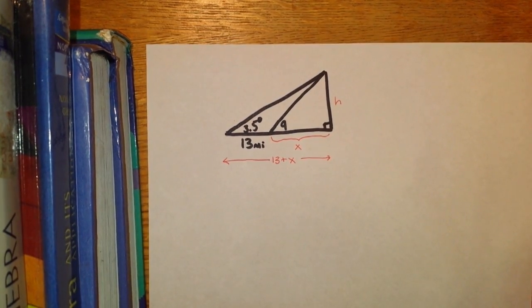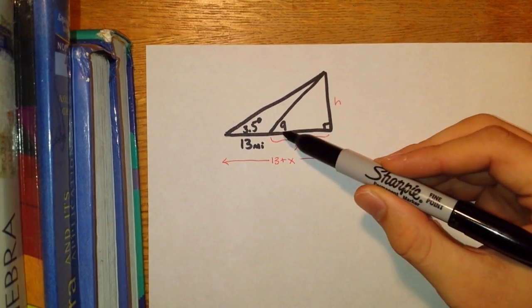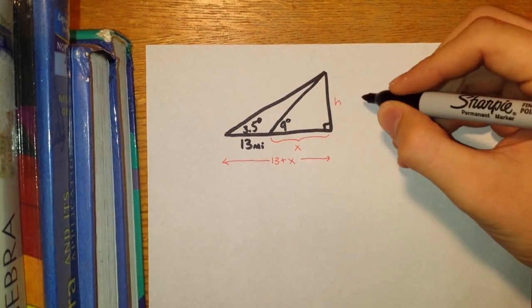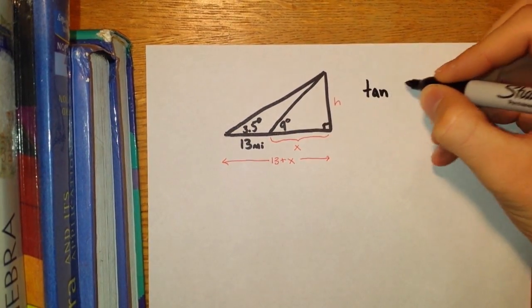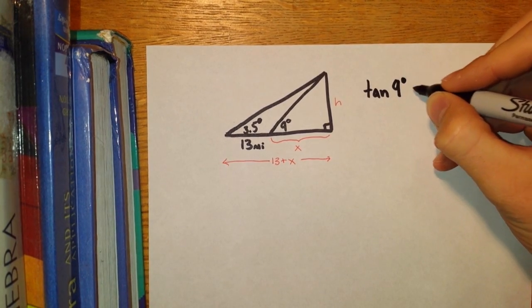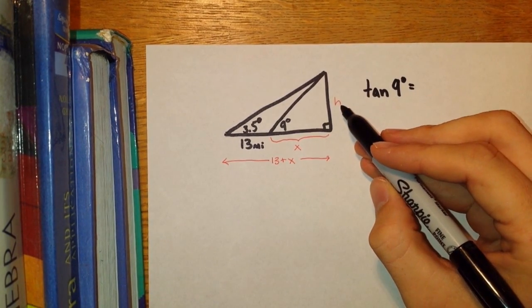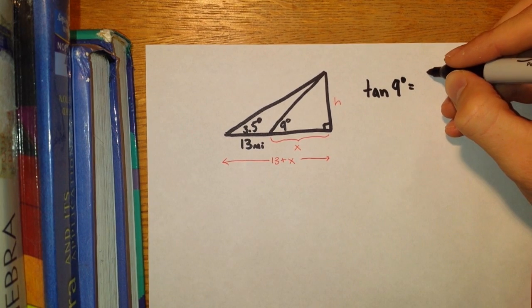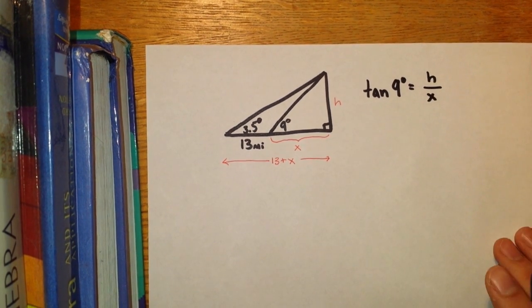So the first equation that I'm going to write is in relation to this small triangle here. We know that the tangent of 9 degrees is equal to the opposite leg divided by the adjacent leg, H over X.